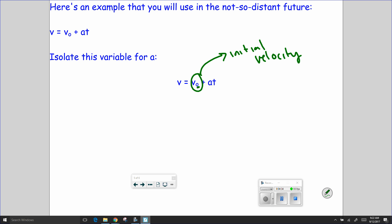If I want to rearrange this equation to isolate a for acceleration, I'm going to use SADMEP. So the first thing I'm going to do is anything that I can subtract away from acceleration. So I'm going to look at initial velocity here. And I'm going to subtract initial velocity from both sides. So it's going to turn into V minus V naught equals AT. So I have subtraction taken care of. I have no addition to do.